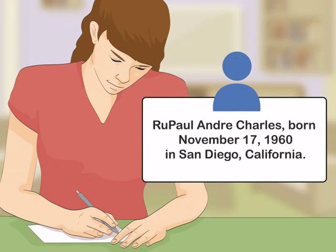For example, you may write: RuPaul Andre Charles, born November 17, 1960 in San Diego, California.